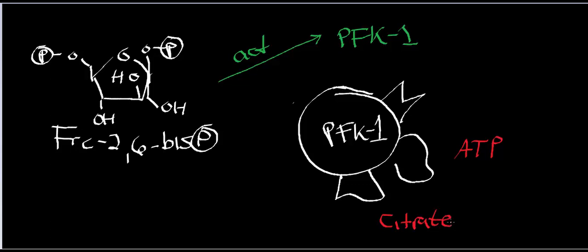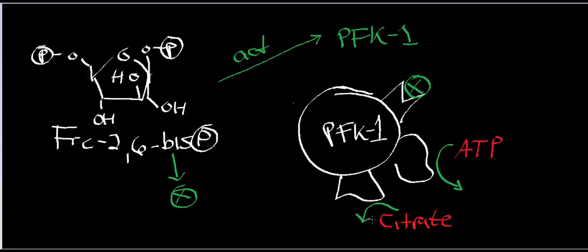Fructose 2,6-bisphosphate activates glycolysis — it activates PFK1. It does this in two ways: first, it allosterically activates PFK1 by itself when it binds the allosteric site. Second, it decreases the allosteric affinity for the inhibitors — it essentially repels them. The allosteric sites for inhibitors on PFK1 have a smaller affinity, so fructose 2,6-bisphosphate effectively acts as an allosteric inhibitor blocker.